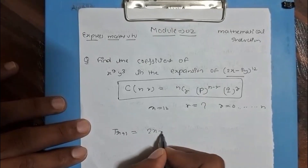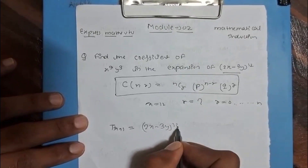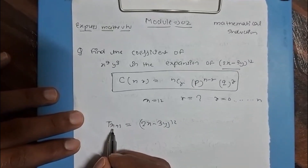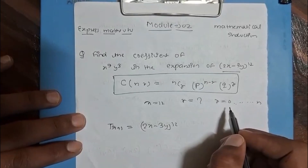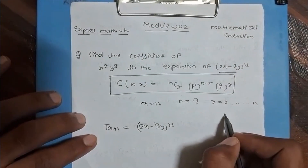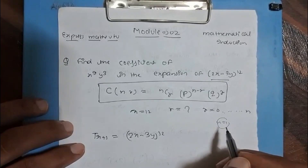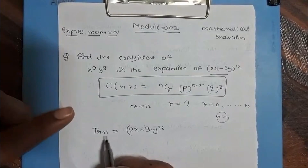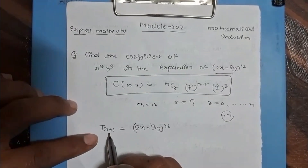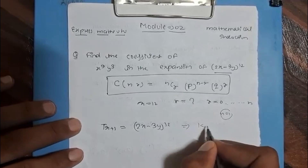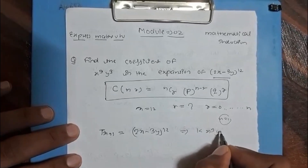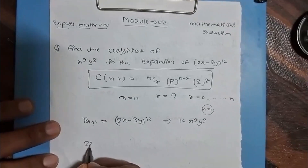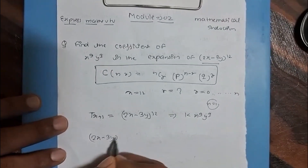We can write the general term as T of r plus 1 for the expansion of (2x minus 3y) to the power 12. We take r plus 1 because the value of r starts from 0. If r started from 1, we would not be able to find the first term. That is why we denote it as T_{r+1}, and this equals k times x to the power 9, y to the power 3.